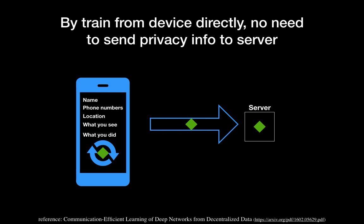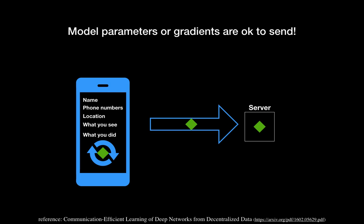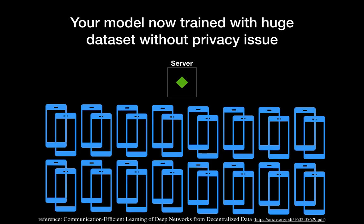After we train from the device, we send the model parameters to the server. Model parameters are weights and biases, and sometimes gradients. They are just numerical values — they don't contain your sensitive information. So it is safe to send them to the server.